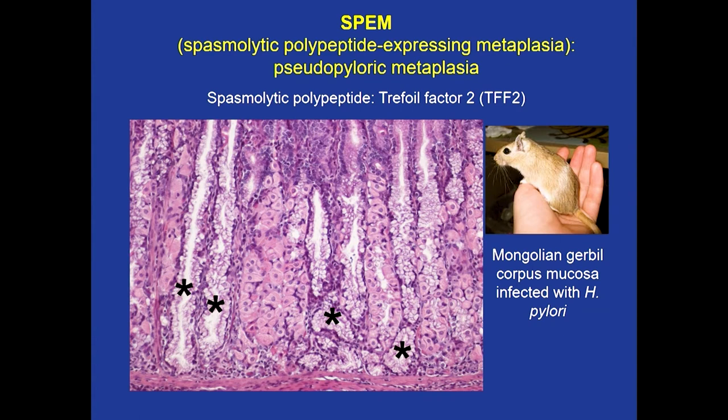The term SPEM, that you may have heard in the literature, refers to a similar process that occurs in animal models of disease. This is the oxyntic mucosa of a Mongolian gerbil infected with H. pylori. The asterisks show glands that have completely lost the chief and parietal cells. This is the main type of metaplasia seen in animal models, not intestinal metaplasia. So it is important and confusing — in animal models you have to be very careful when you interpret metaplasia, because usually it is this type and not intestinal metaplasia.